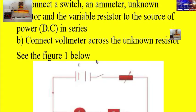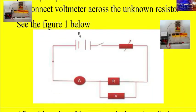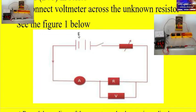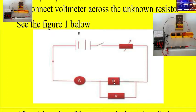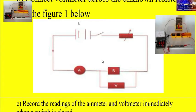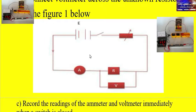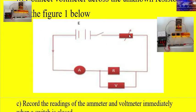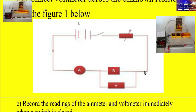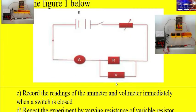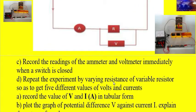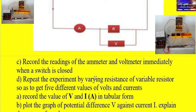See the diagram below. We have a cell or battery (EMF — electromotive force), a rheostat, an ammeter, an unknown resistor R, and a voltmeter. The connection is: the rheostat, cell, ammeter, and resistor are in series, but the voltmeter is in parallel with the resistor. That is our circuit diagram.